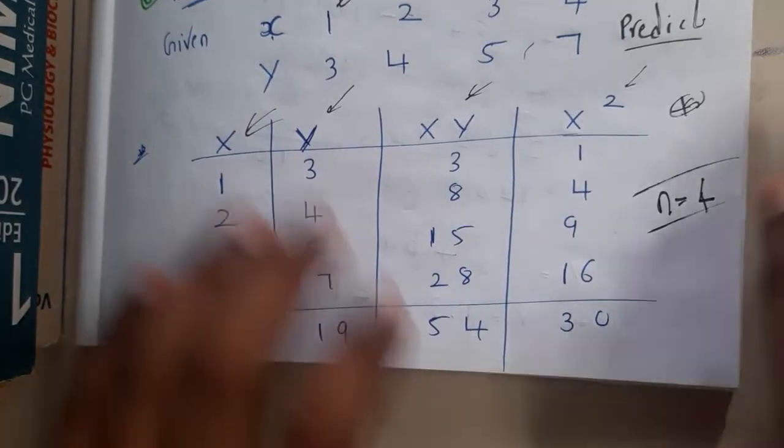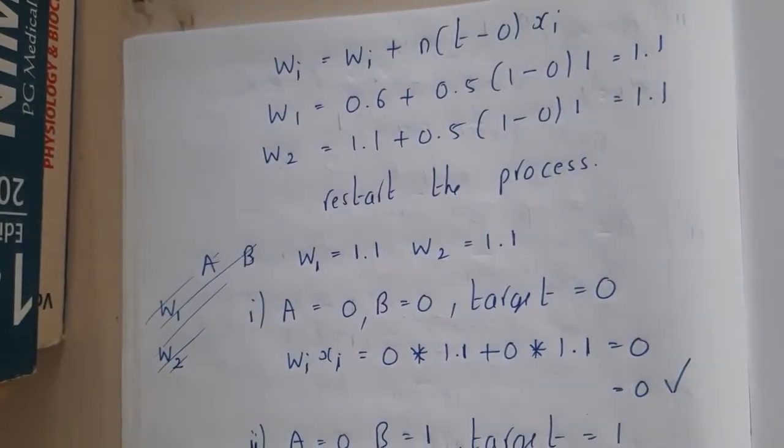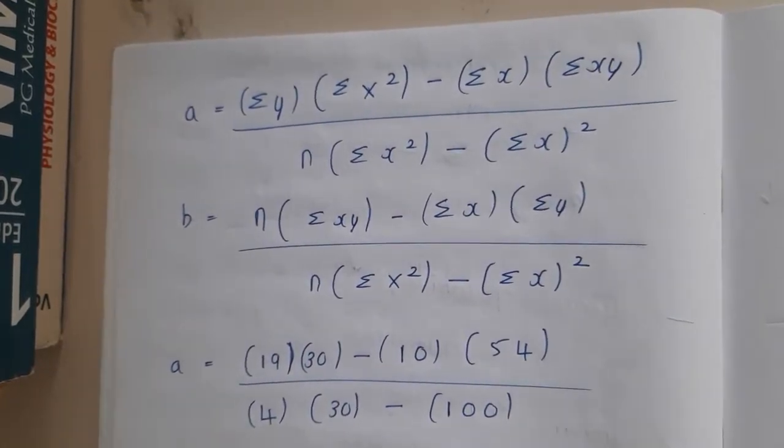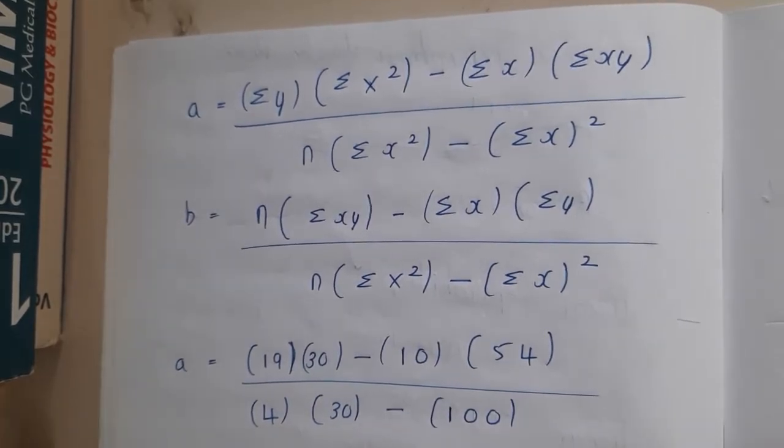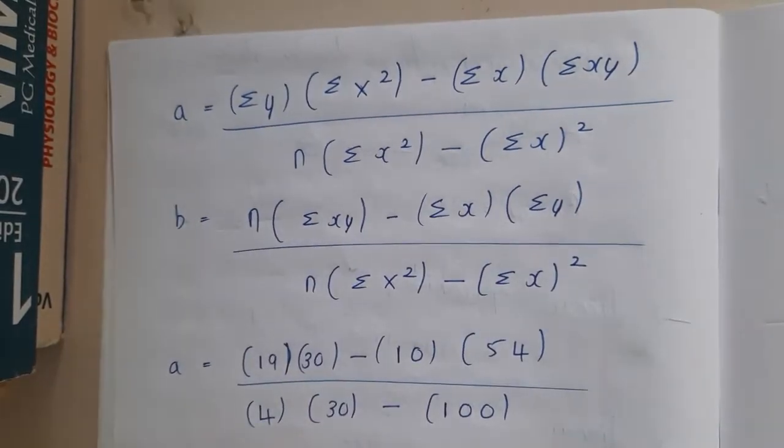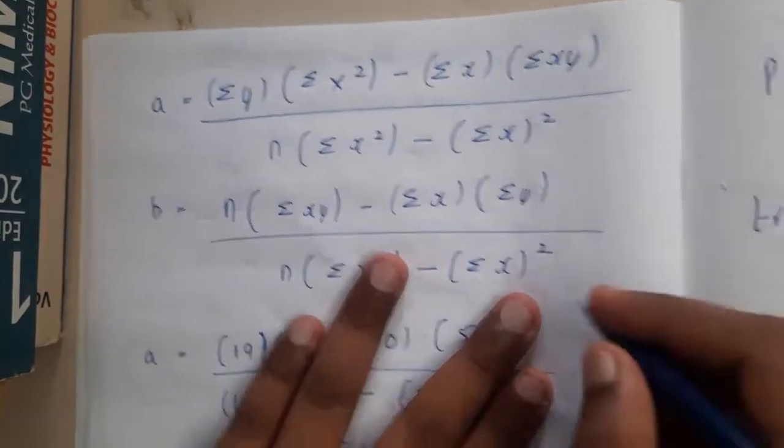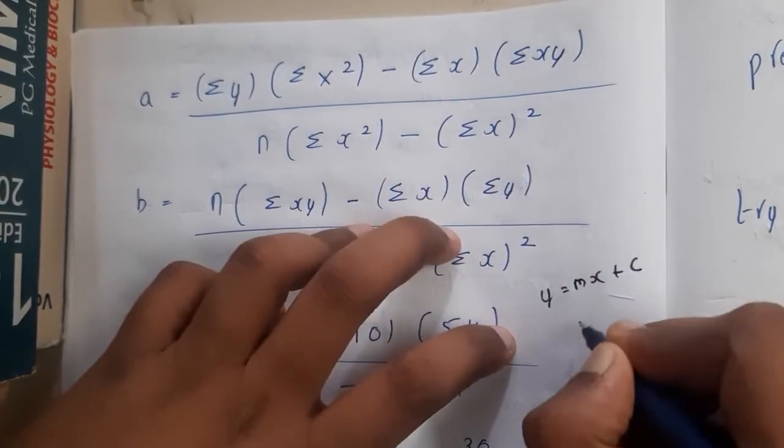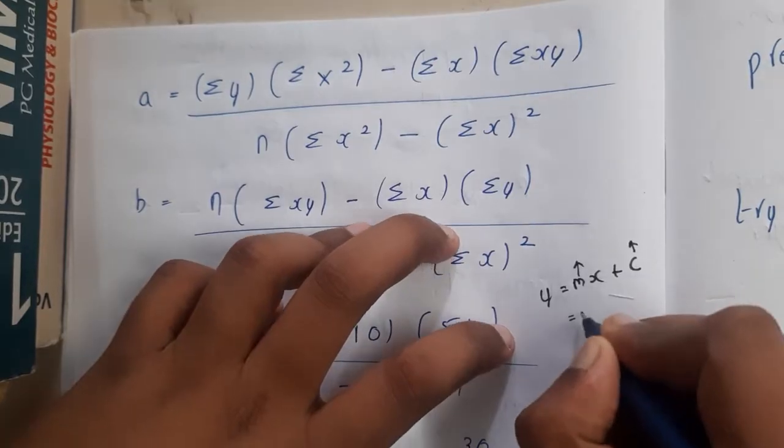The formula will look in this way. Basically the toughest part is remembering the formula. There could be some trick, but right now I did not get any kind of proper tricks. First of all, remember the denominator - it's the same in both. At the end what we are trying to get is we know y equals mx plus c, right?